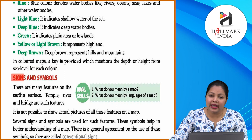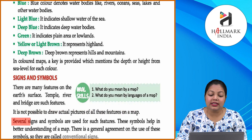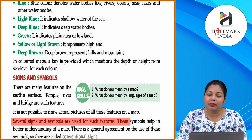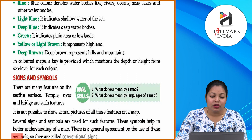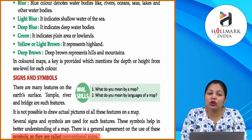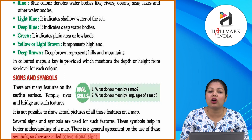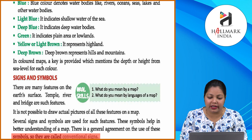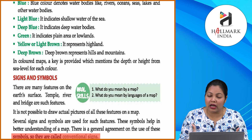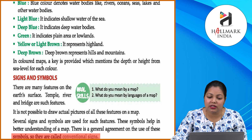Signs and symbols: There are many features on the earth's surface — temple, river, and bridge are such features. It is not possible to draw actual pictures of these features on a map, so several signs and symbols are used. These symbols help in better understanding of the map. There is general agreement on the use of these symbols, so they are called conventional signs. In symbols ko hum conventional symbols bhi bolte hain.